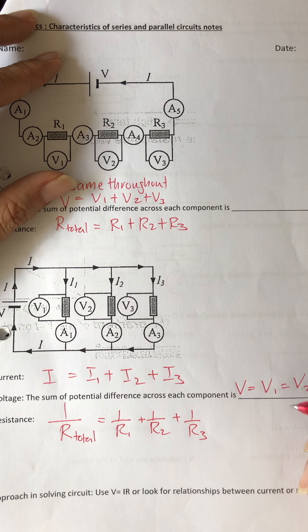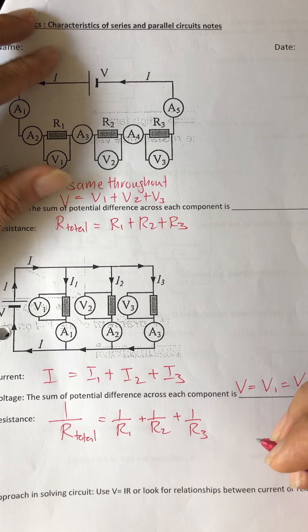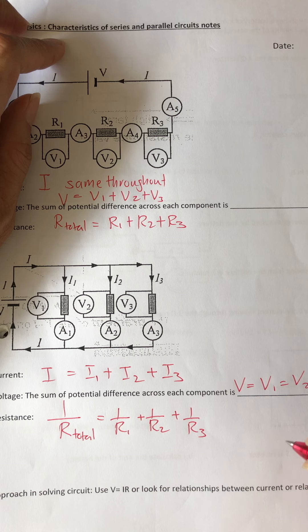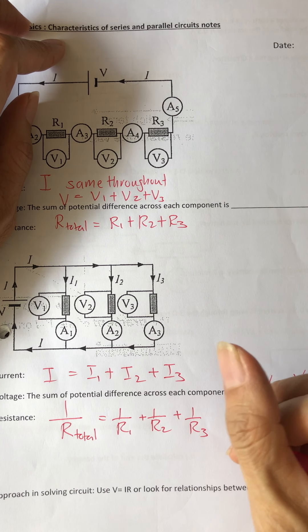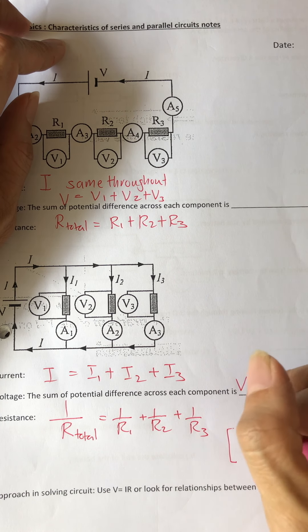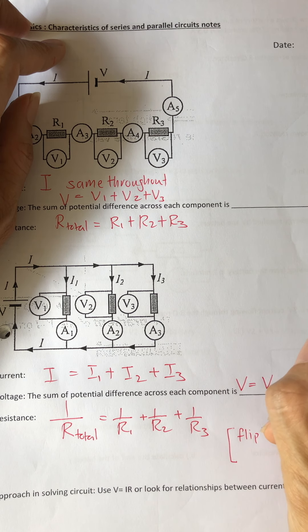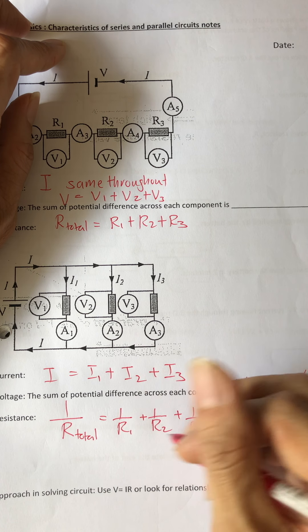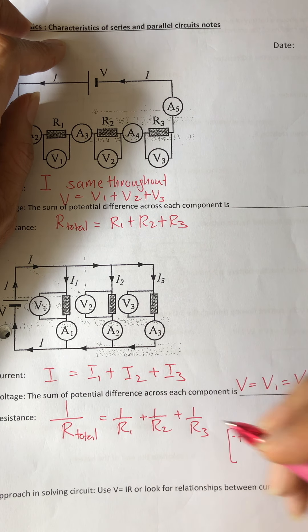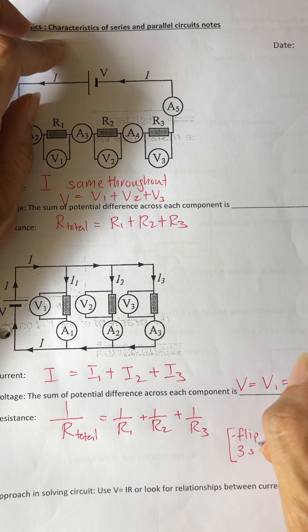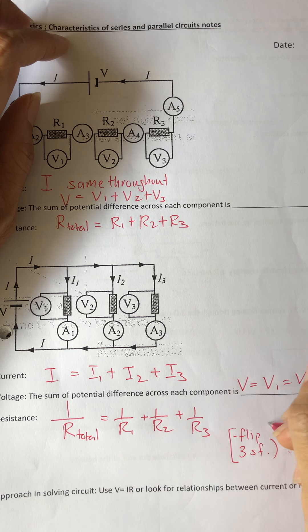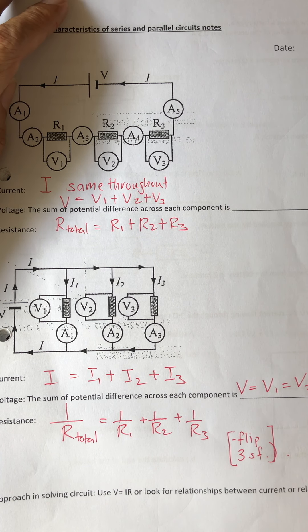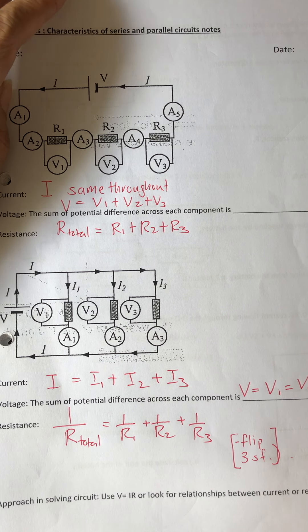When you use this formula, it's very easy but also sometimes easy to make mathematical mistakes. Always remind students to remember to flip at the end. You get a common denominator, add everything up, flip it, and then the answer must be 3 significant figures.